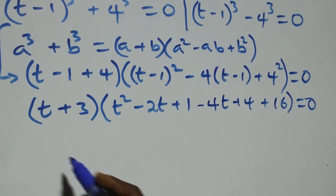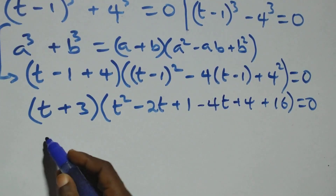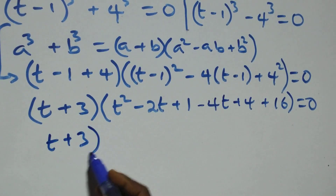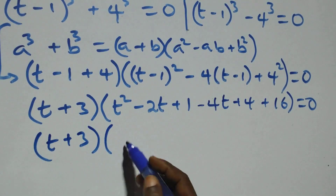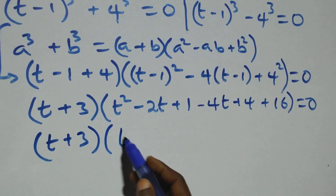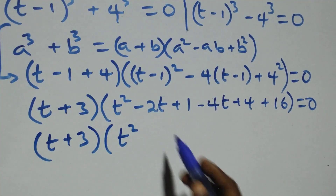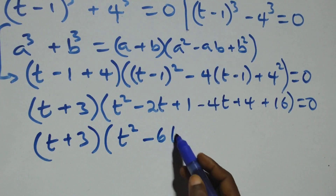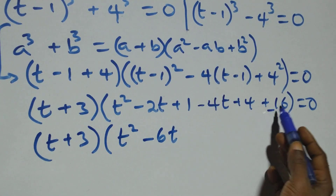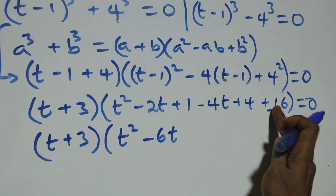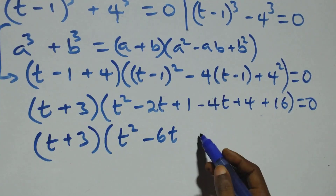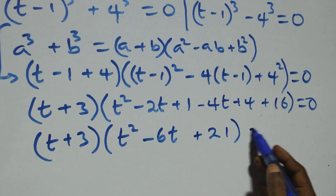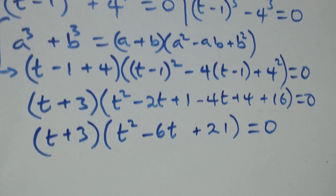The next step: we have (t + 3) times (t² − 6t + 21) equals 0, combining: minus 2t minus 4t gives minus 6t, and 4 plus 16 plus 1 gives 21.